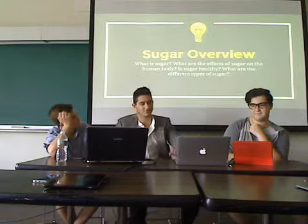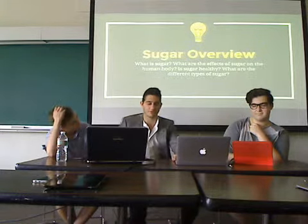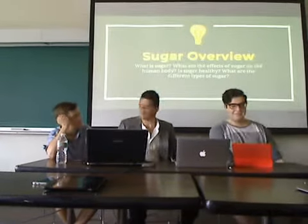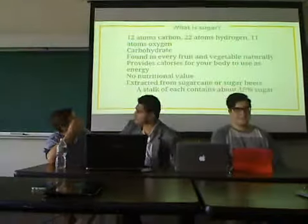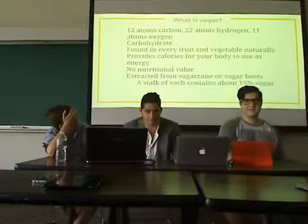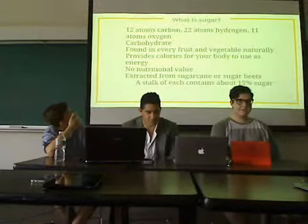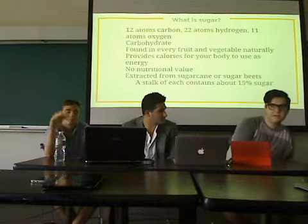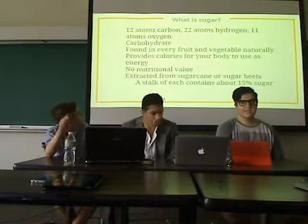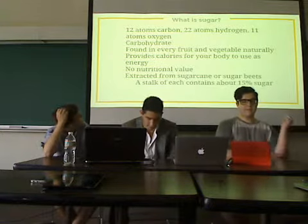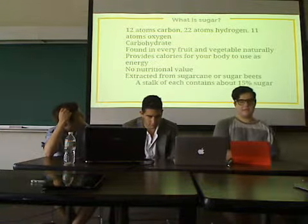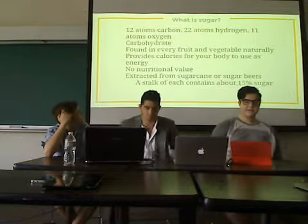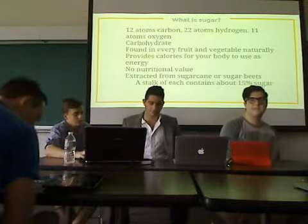Now we are going to present the sugar overview — how it's made. Cory will present. Sugar is made from 12 atoms of carbon, 22 atoms of hydrogen, and 11 atoms of oxygen. Depending on the type of sugar, how these atoms are arranged differs — for example, glucose and fructose are arranged differently. It is a carbohydrate, found naturally in every fruit and vegetable. It provides calories for your body to use as energy, but they have no nutritional value, so they are empty calories.